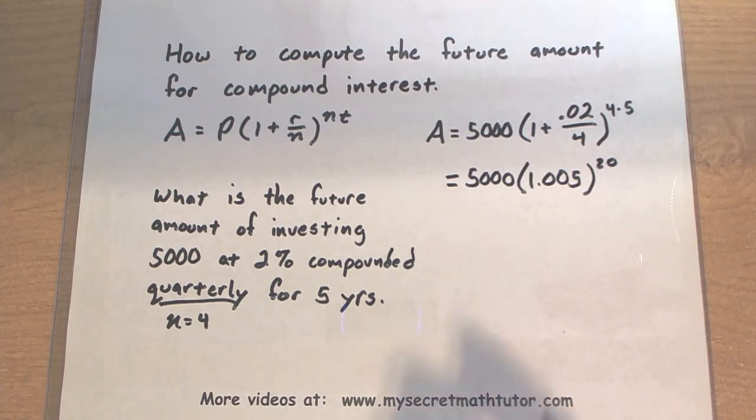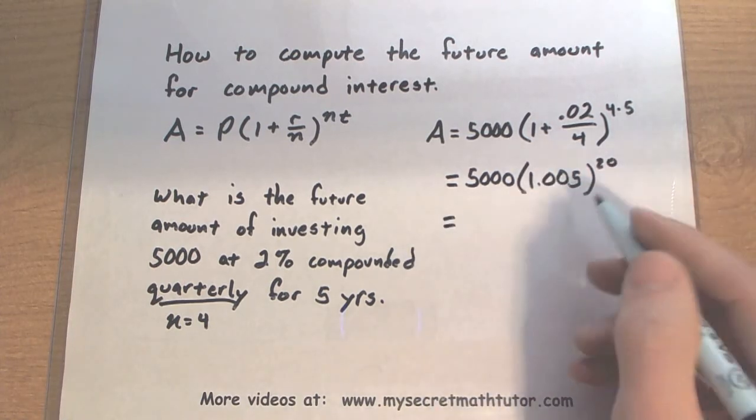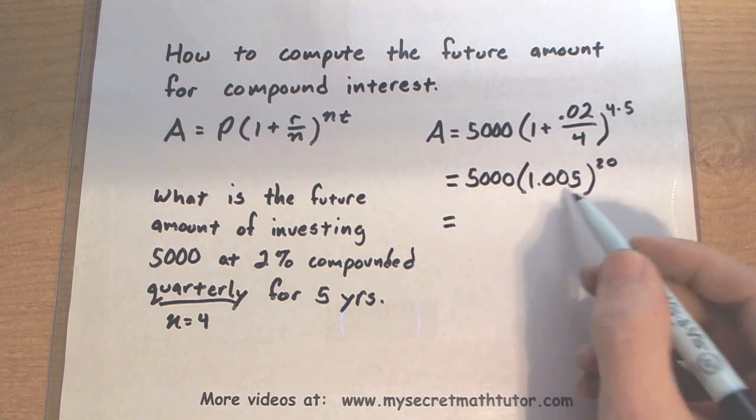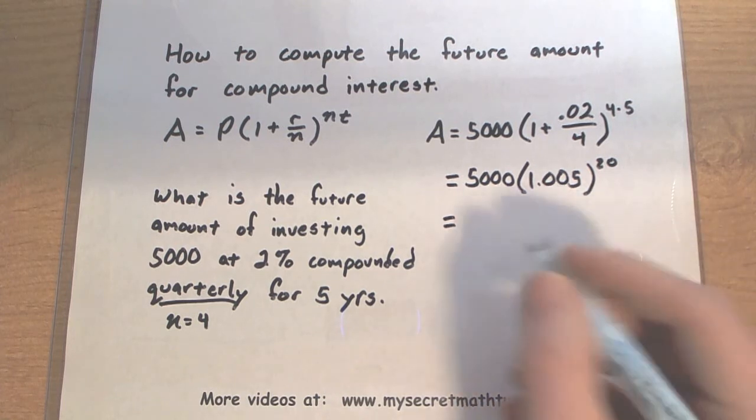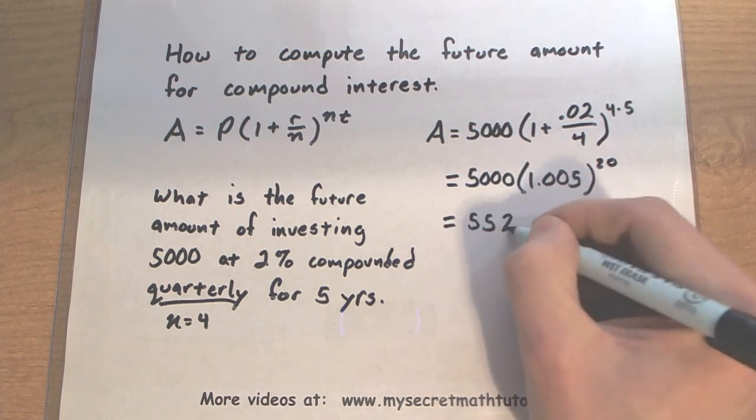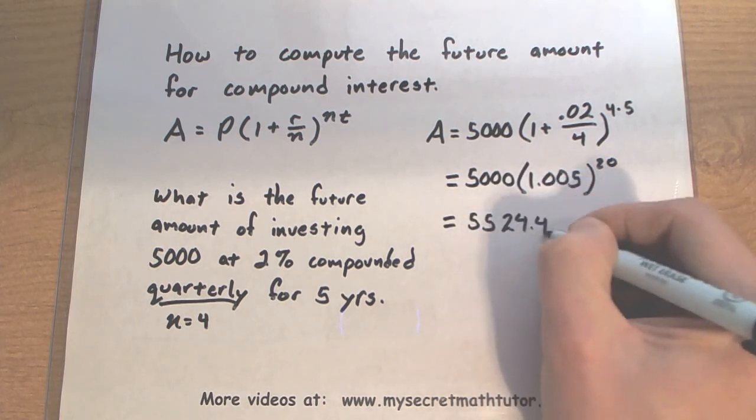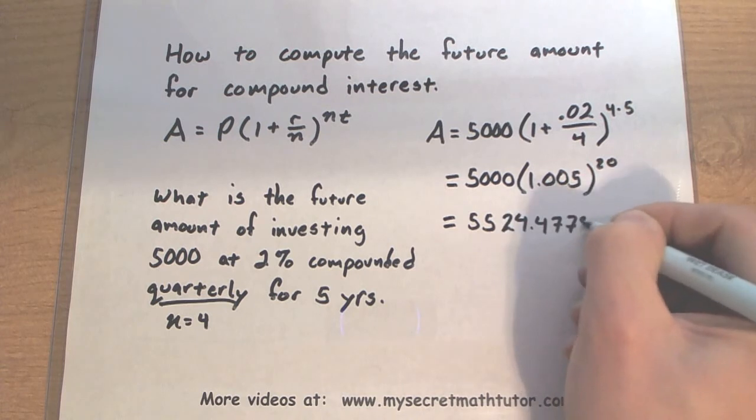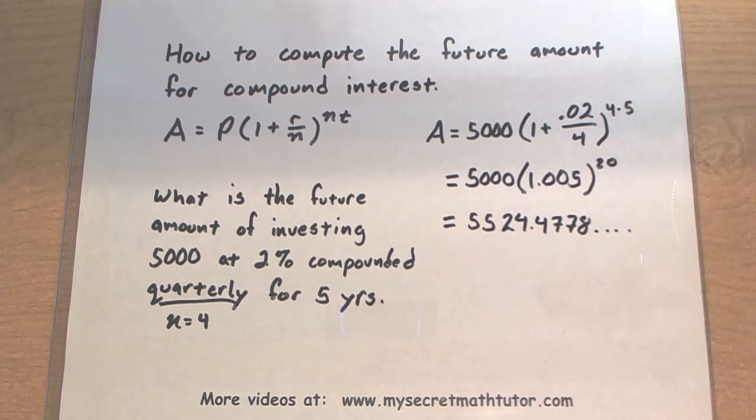Continue evaluating this. Take 1.005 to the 20th, multiply by 5,000, and this will give you 5,524.4778, and it looks like it just keeps going on and on.